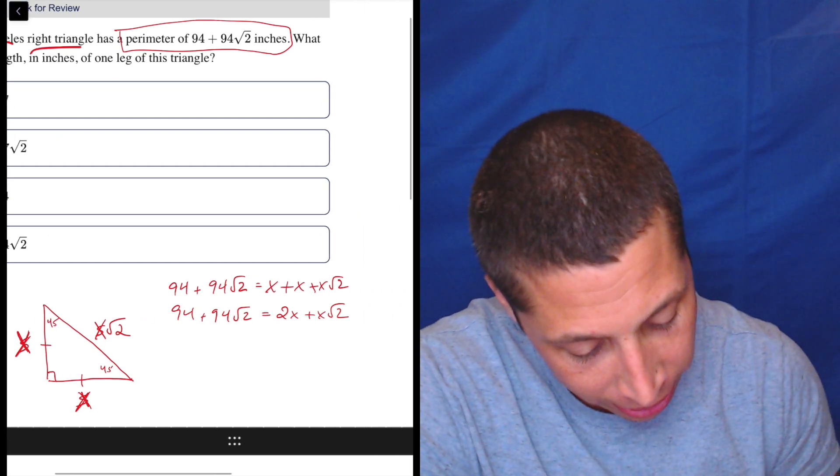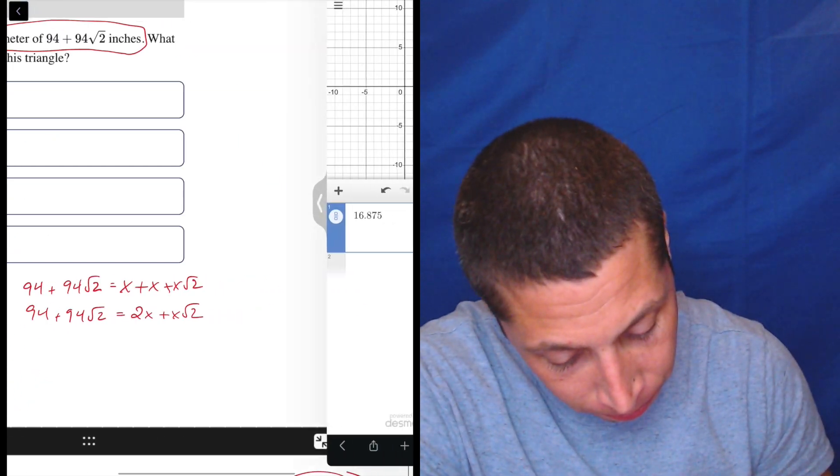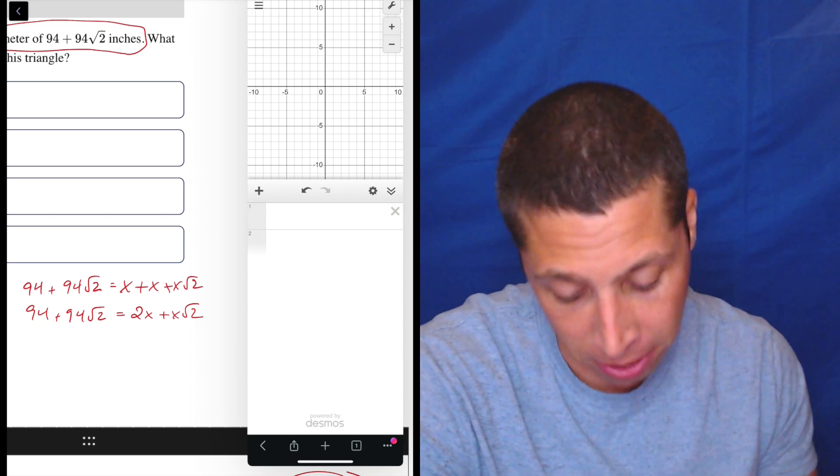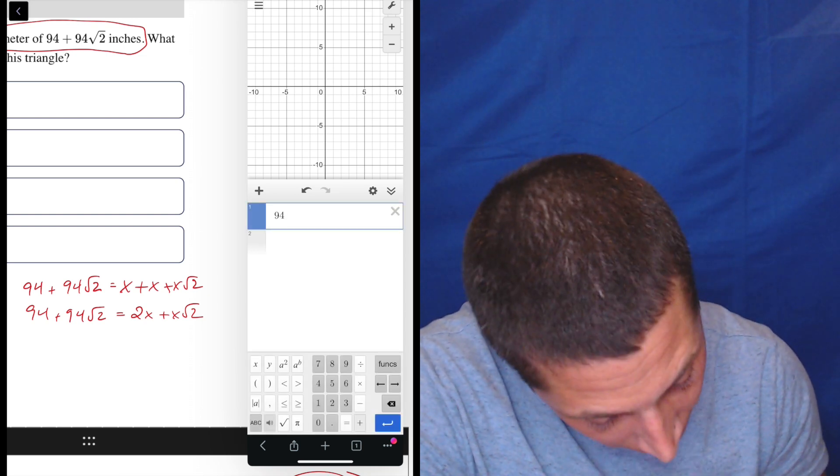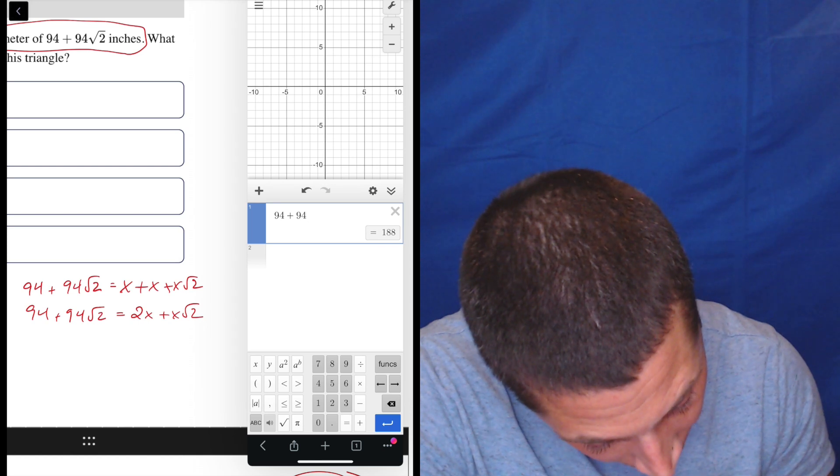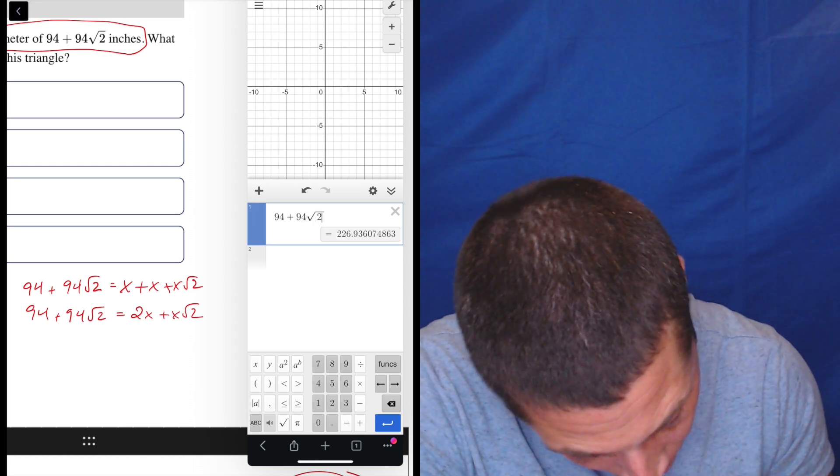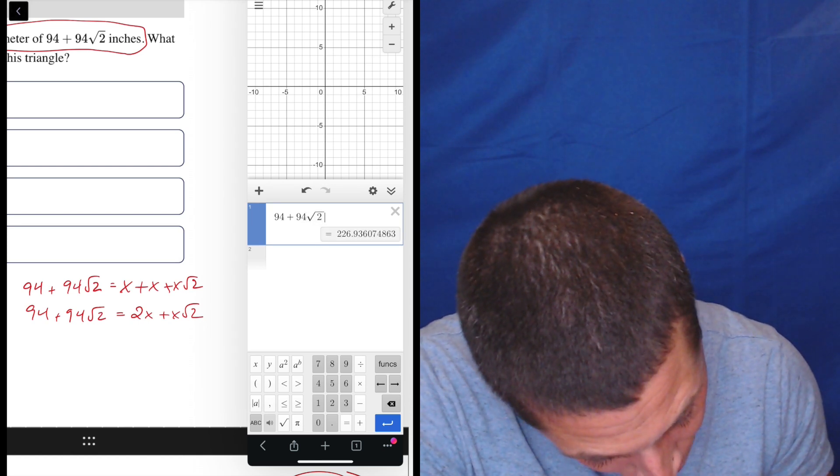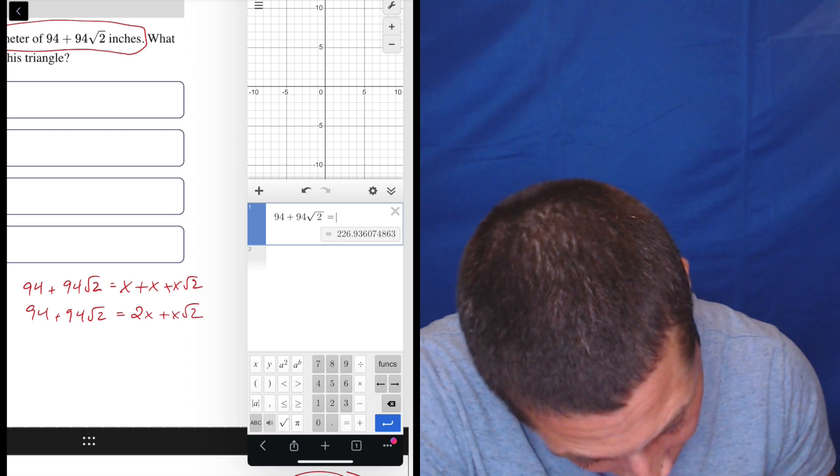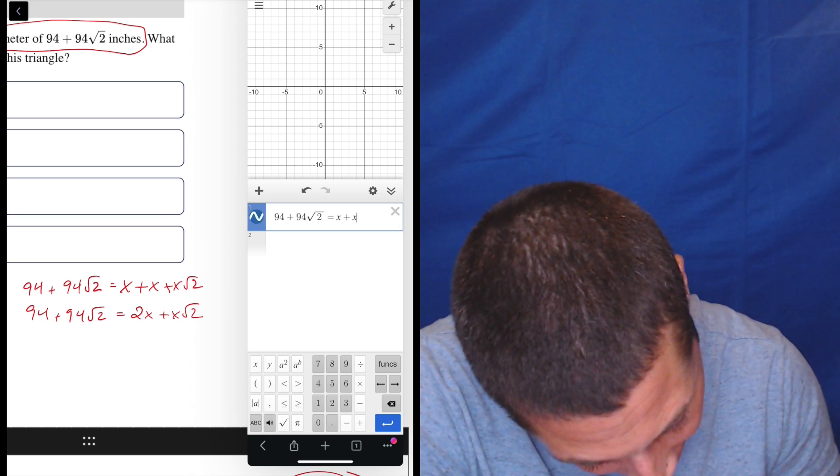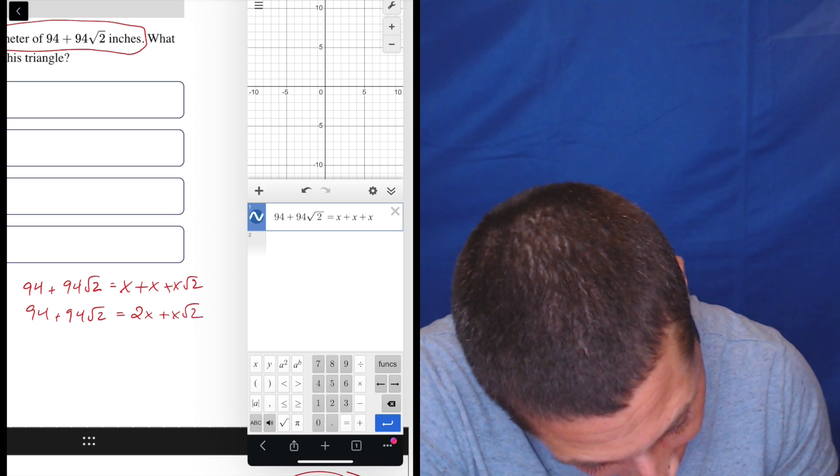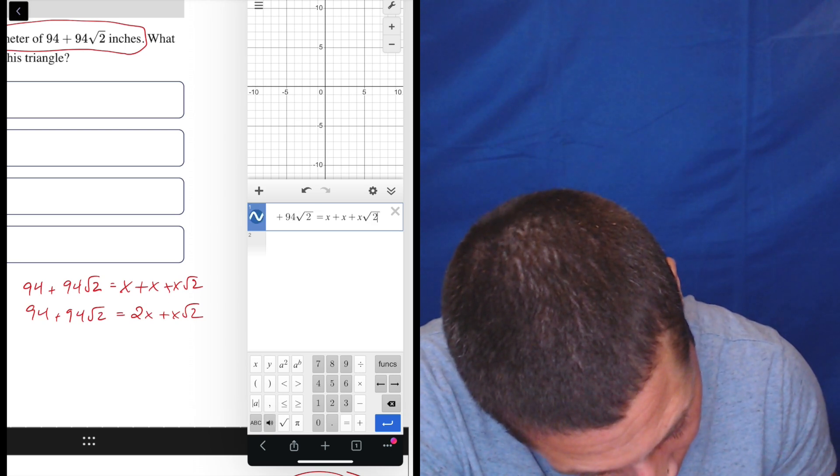Here's my advice. Just go to Desmos. We have an equation with one variable. Let's just let it do it. So 94 plus 94 square root 2 is equal to, we can just do, let's do it all the way back to basics. X plus X plus X root 2.